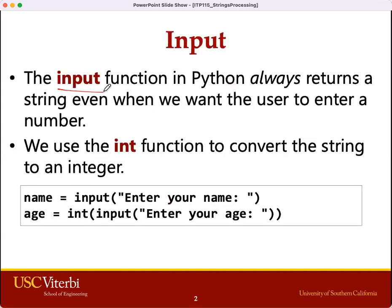As we learned, the input function in Python captures whatever the user types in and returns a string to us. So when we want to capture a number, we need to wrap or convert that string to a number with the int function. For example, we ask the user for their age. The input function returns a string, and we can convert that string using the int function and store the int value in our age variable.